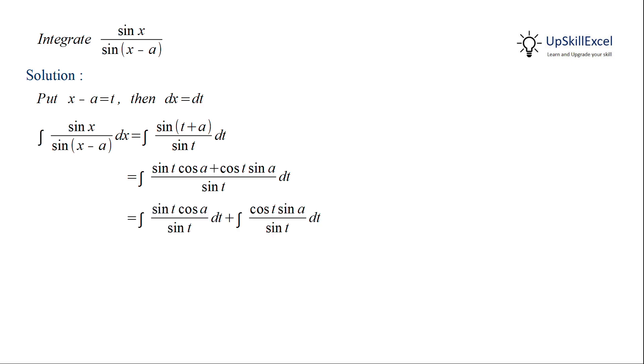We observe that in the first term sin t gets cancelled out, and in the second term cos t over sin t can be replaced with cot t.